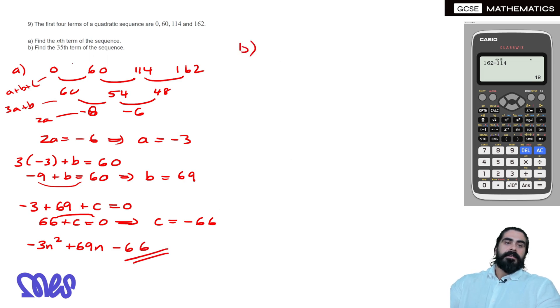Then finally, find the 35th term. So when N equals 35, we are just going to sub in 35 into our sequence. And there's our solution, minus 1326 is our solution to question 9.